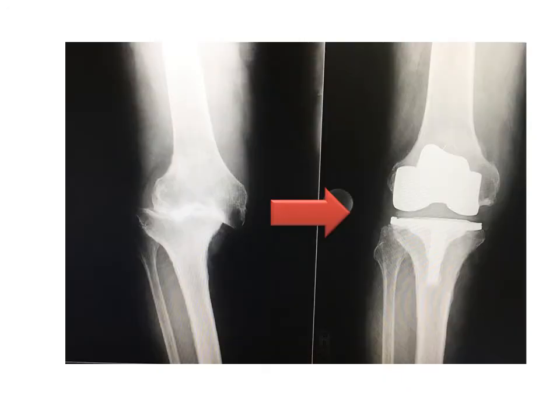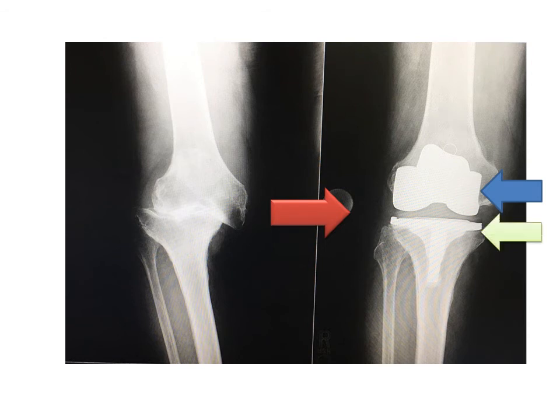This is another example of a patient who is 80 years old. You can see severe arthritis, complete subluxation of the joint, the femur sliding off of the tibia, instability, and a lot of pain. The only treatment that will provide a satisfactory outcome is a total knee replacement — the femoral component, the tibial component, and the plastic in between. This provided correction of deformity, stabilization of the knee, and treatment of the arthritis.